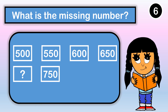What is the missing number? Five hundred, five hundred fifty, six hundred, six hundred fifty, our missing number, and last, seven hundred fifty. I'll give you a clue — we are skip counting by fifty. Our missing number is seven hundred.